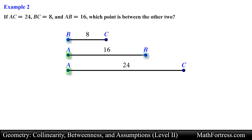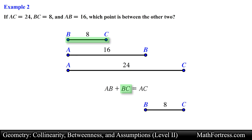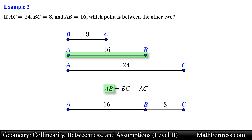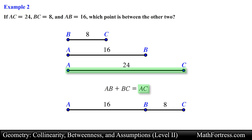If points A, B, and C are collinear, then the sum of the lengths of the smallest segment plus the medium segment would add up to the length of the largest segment. In this case the endpoints of the largest segment are formed by point A and point C. This means that point B is between these two points, and this is our final answer. Let's move along to the next example.